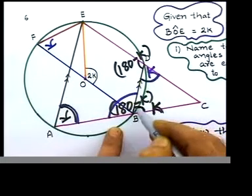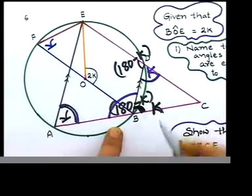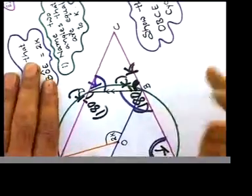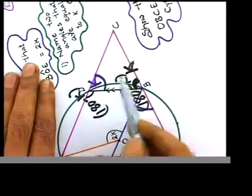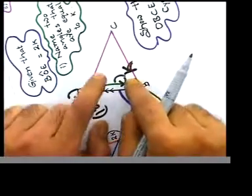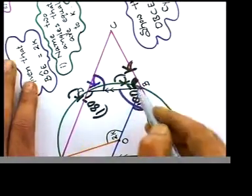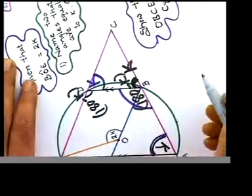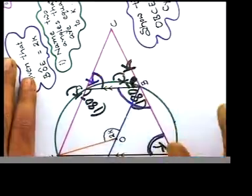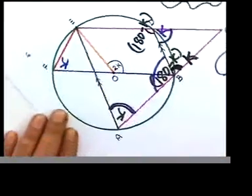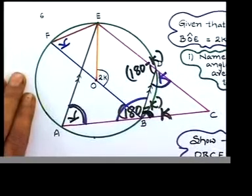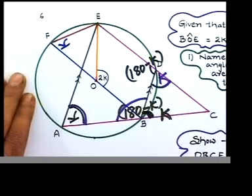If you turn it like this, you actually see triangle BDC where the base angles are equal. This is k, that is also k. If these two are equal, what kind of a triangle is BDC? Base angles equal, we call it isosceles triangle. That's an isosceles triangle.